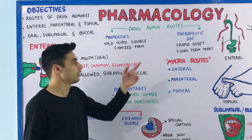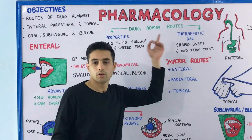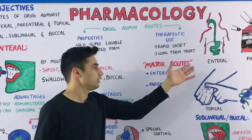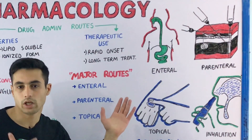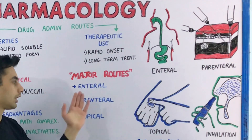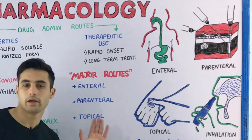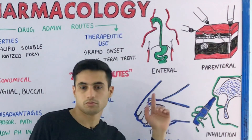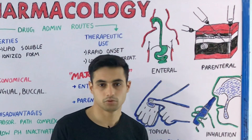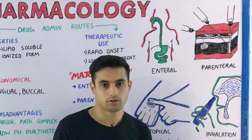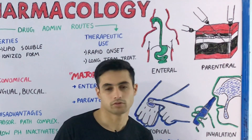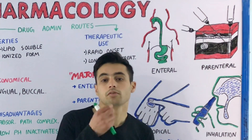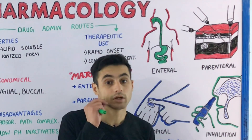These factors are determined by the properties and the therapeutic use. There are three major routes through which you can take medication into your body: the enteral, parenteral, and the topical. The word 'enteral' means intestine, so this route is any part which leads to your gastrointestinal tract. The enteral route mainly consists of the oral, sublingual, and the buccal.